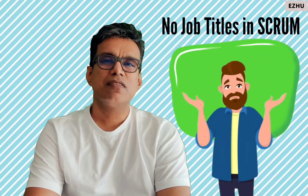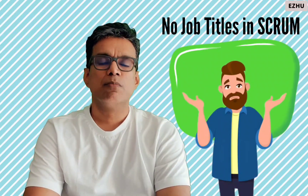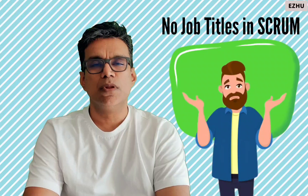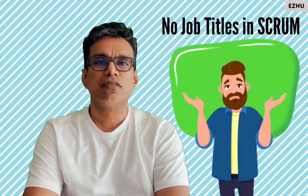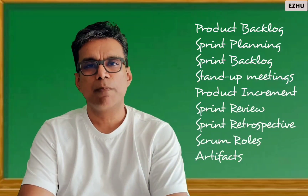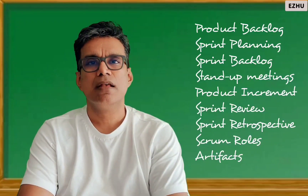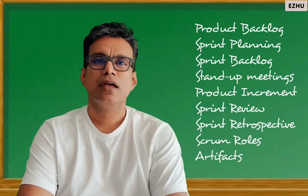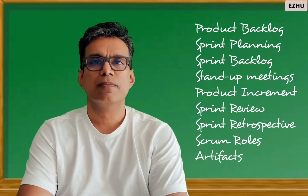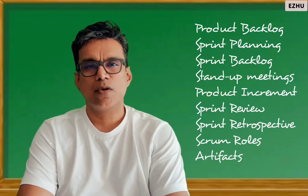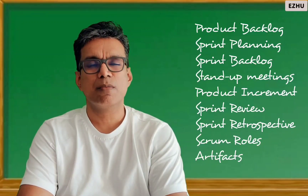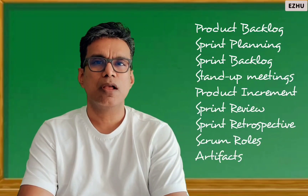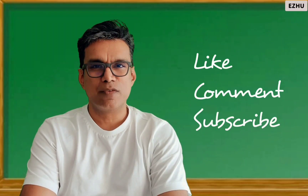Scrum does not care about job titles anymore. Organizations are now focused on transitioning from processes and tools towards a more people-centric approach — building skills and getting closer to the customer. To summarize, we learned about the product backlog, sprint planning, sprint backlog, daily cadence meeting, product increment, sprint review, and sprint retrospective. The roles are: product owner, Scrum master, and cross-functional development teams. The artifacts are: product backlog, sprint backlog, and product increment. That brings us to the end of the session.